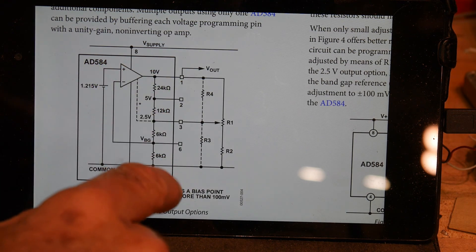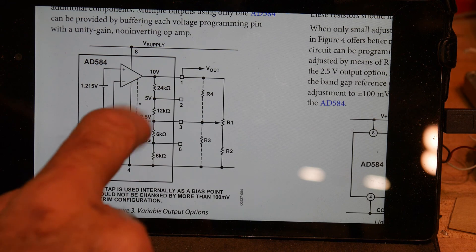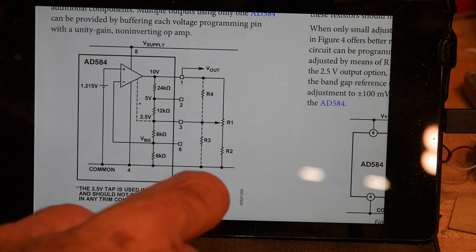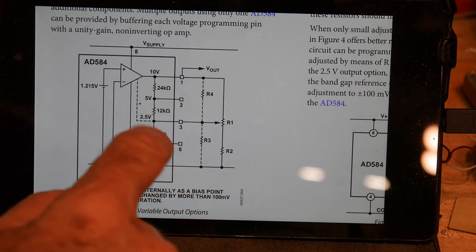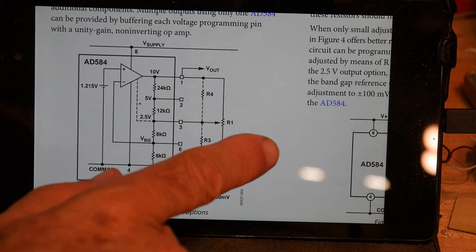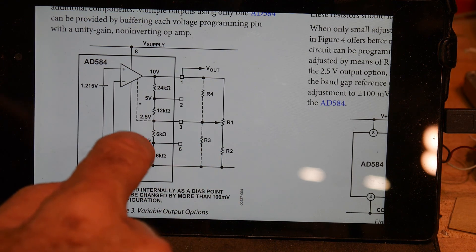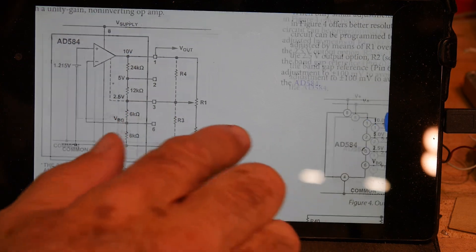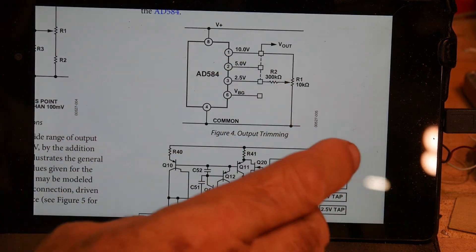And then they have a dividing string here. So you get a 10 volt, a 5 volt, and a 2.5 volt. So if you take 10 out, if you take 5 out, you can take 5 plus 2.5. That gives you the 7.5 or you can take the 2.5 out.